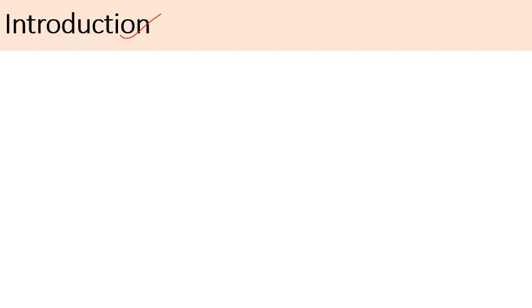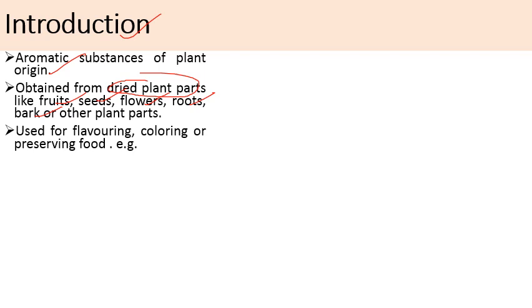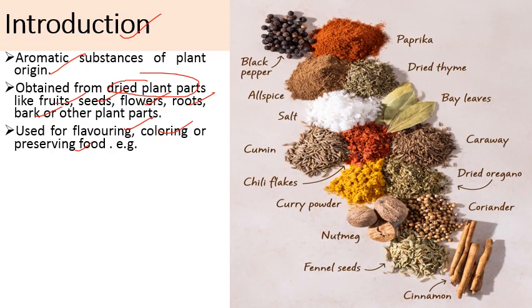Spices are basically plant products in which we use different plant parts which have special flavoring agents, essential oils or other chemical substances which impart special aroma or flavor to food items. Spices are aromatic substances of plant origin, obtained from dried plant parts like fruits, seeds, flowers, roots, bark or other plant parts. They are used for flavoring, coloring or preserving food items. Examples include black pepper, allspice, cumin, curry powder, nutmeg, fennel seeds, coriander, oregano, caraway, bay leaves, dried thyme, and paprika.